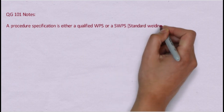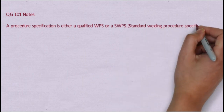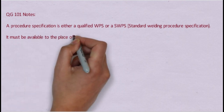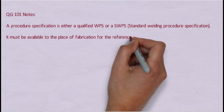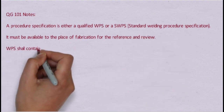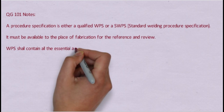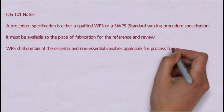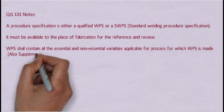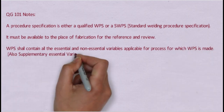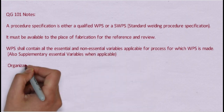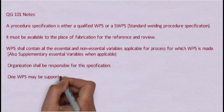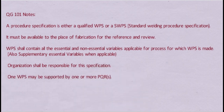There are some important notes on QG101. Once a procedure specification is either a qualified WPS or a SWPS, it must be available at the place of fabrication for reference and review. The WPS shall contain all the essential and non-essential variables applicable for the process for which the WPS is made, and also supplementary essential variables when applicable. Organizations shall be responsible for this specification. One WPS may be supported by one or more PQRs.